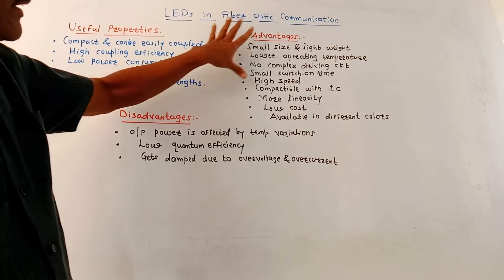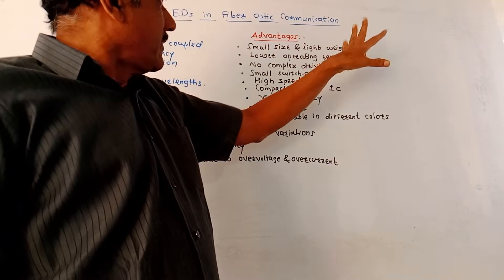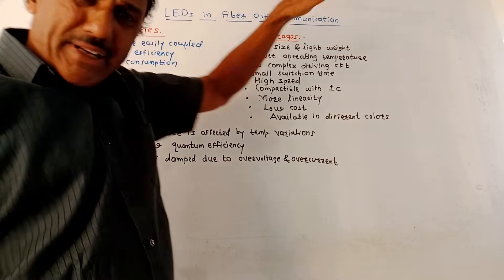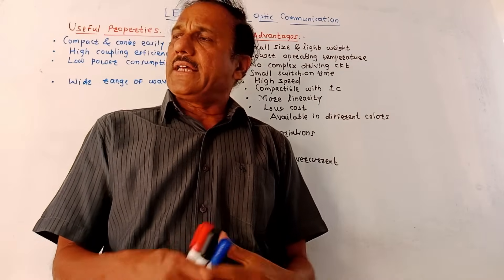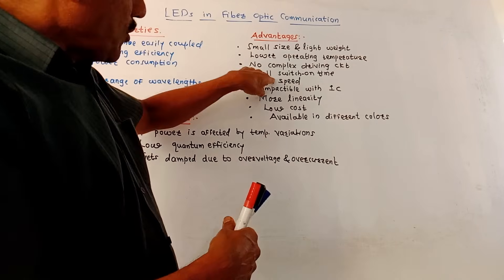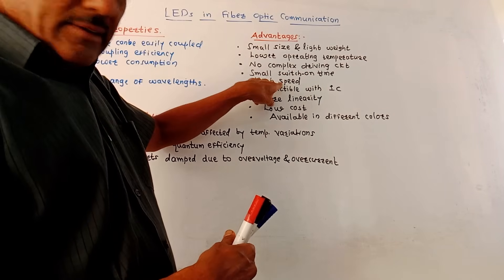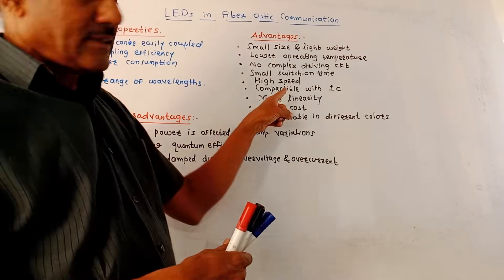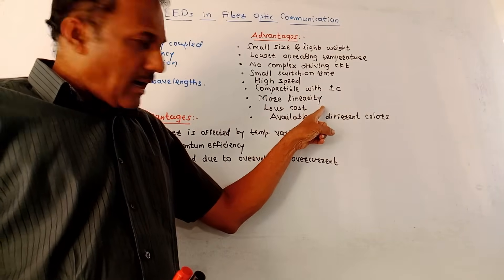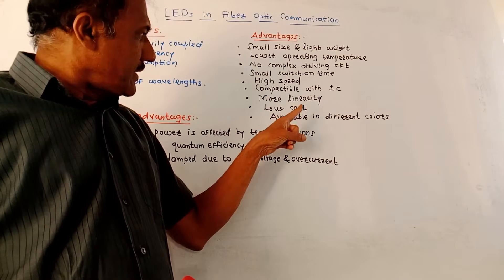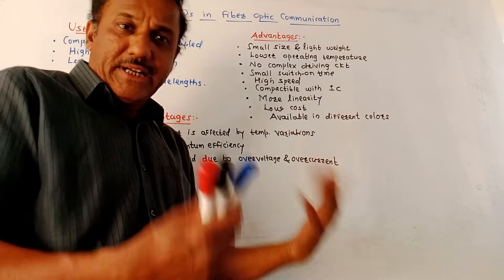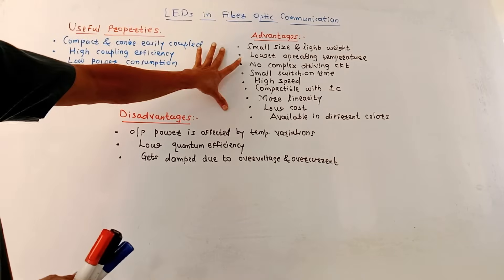Advantages of LED: size is small and low weight, lower operating temperature, no complex driving circuitries are required — whereas in case of other light sources complex driving circuitry is required. Small switch-on time, high speed performance, compatible with integrated circuits, high linearity, low cost, and available in different colors — that means different wavelengths of light can be produced.